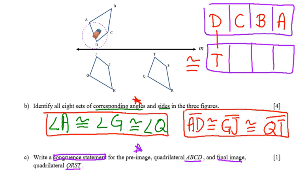Where does C map to? C maps to I maps to S, so C maps to S. Next.